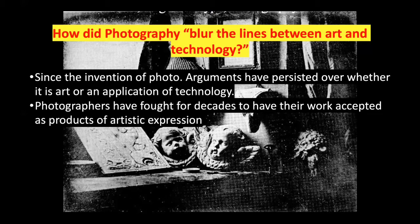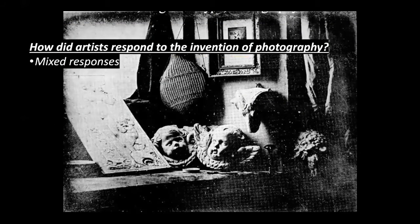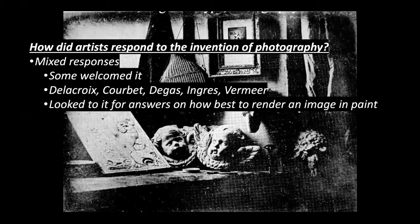Since the invention of photography, arguments have persisted over whether photography is considered art or technology. If it's something everybody can do, is it really an art form? Photographers have fought for decades to have their work accepted as products of artistic expression. Daguerre promoted photography for scientific purposes and as a medium for artistic expression. Artists like Delacroix, Courbet, Degas, and Vermeer used photography as an aid to painting and drawing, while others were threatened by it and refused to consider it art.